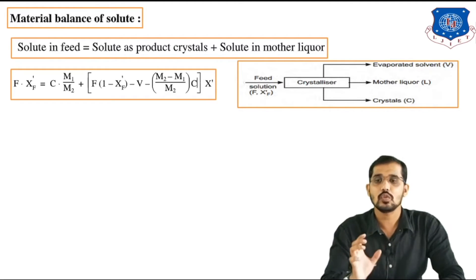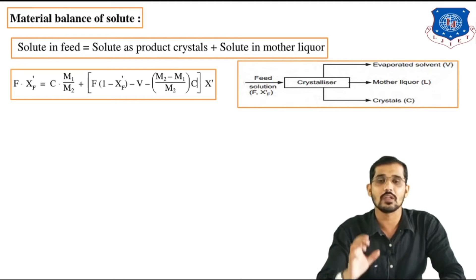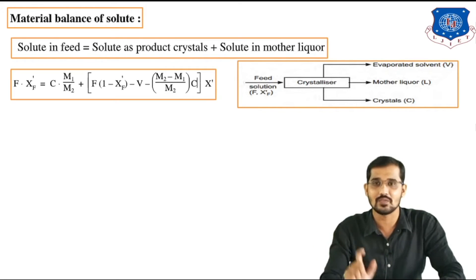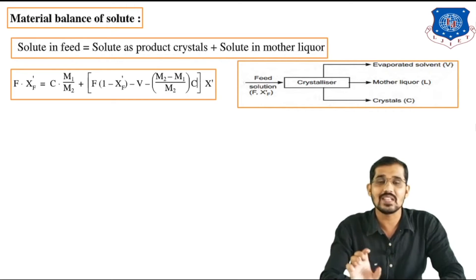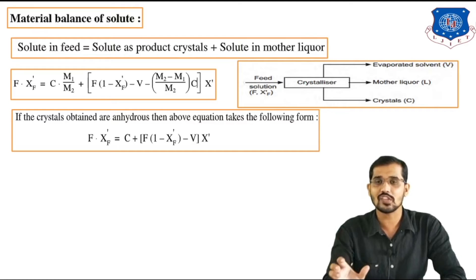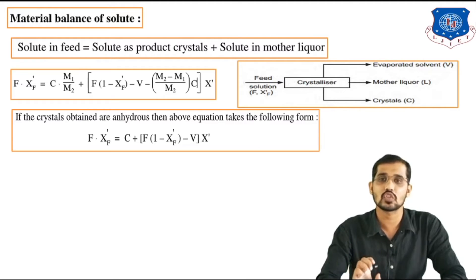Here F is the mass flow rate of the feed, XF' is the weight fraction of solute in the feed, C is the mass flow rate of crystals, M1/M2 is the weight fraction of solute in the crystal, the bracketed term is L' (derived previously), and X' is the solubility of solute in the solvent. If the crystals obtained are anhydrous in nature, the equation simplifies to: F × XF' = C + [F(1 − XF') − V] × X'.